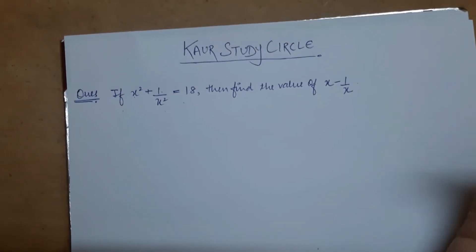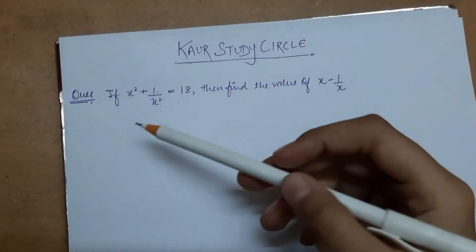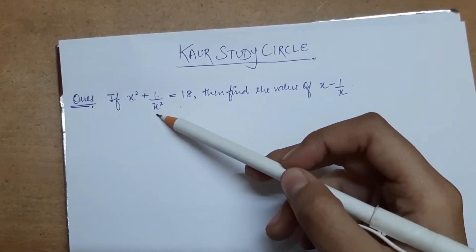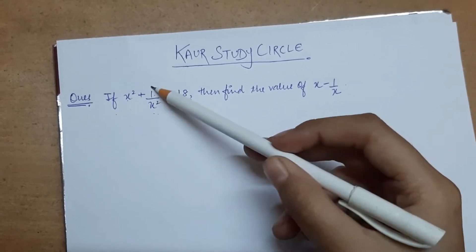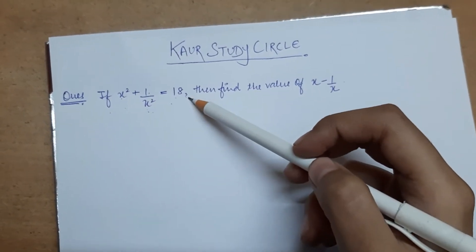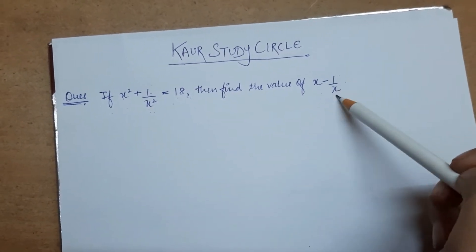So let's start with this question. The question is: if x square plus 1 by x square is equals to 18, so we have given the value of x² + 1/x² which is 18, and we have to find the value of x minus 1 by x.